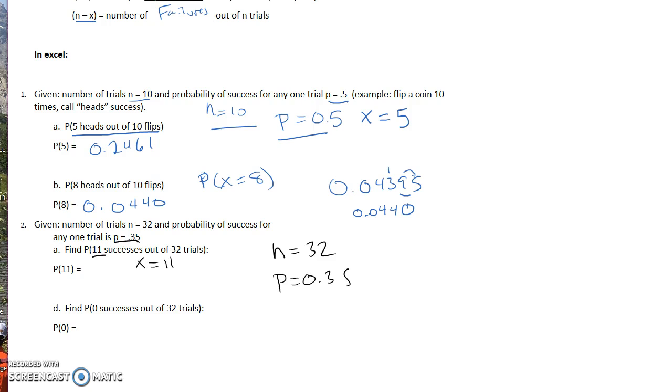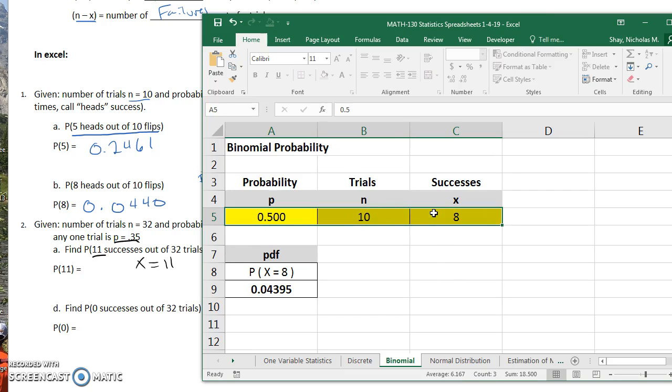So I'm going to go to my Excel worksheet. We're going to clear out the values we have. For P, I am going to put 0.35. For N, I'm going to put 32 trials, and I want the probability of getting 11 successes, and that gives me 0.1468.